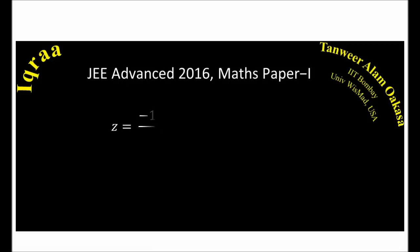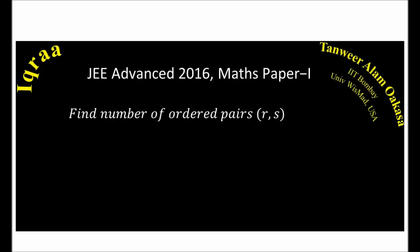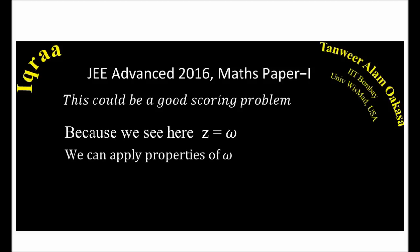Let's go for the complex number problem. The problem says z = −1/2 + i·√3/2, and a 2×2 matrix is given where r, s belong to integers 1, 2, and 3. We need to find the number of ordered pairs (r, s) so that P² equals minus the identity matrix. This could be a good scoring problem because z is equal to ω, a complex cube root of unity. We can apply properties of ω: ω³ = 1, ω⁴ = ω, ω⁵ = ω², ω⁶ = 1, and so on.